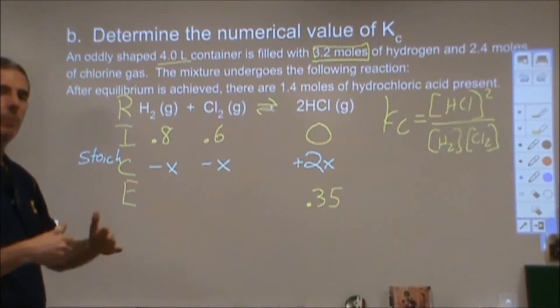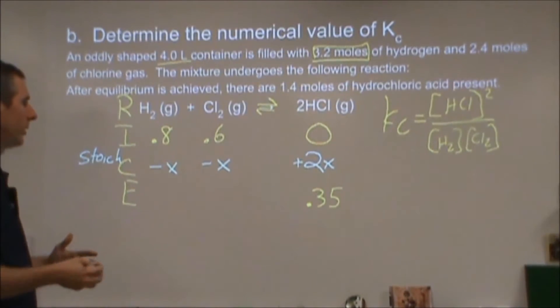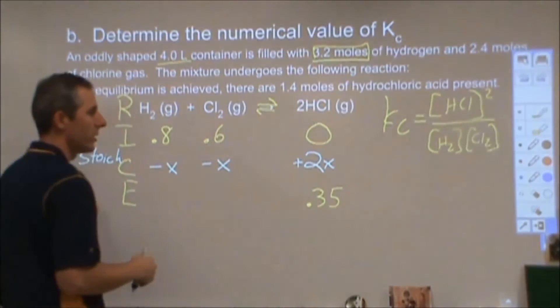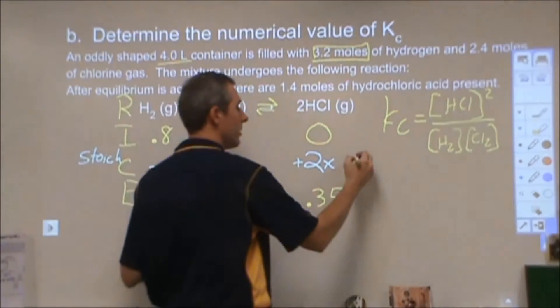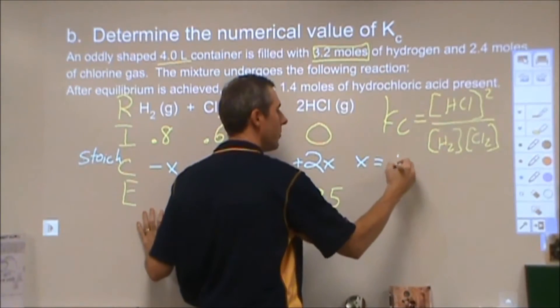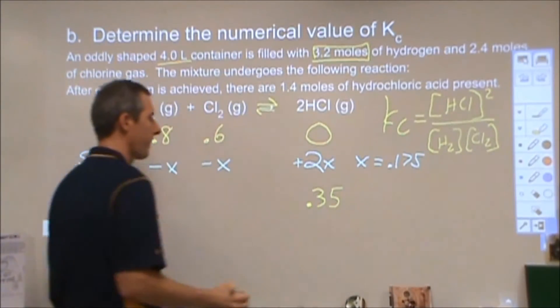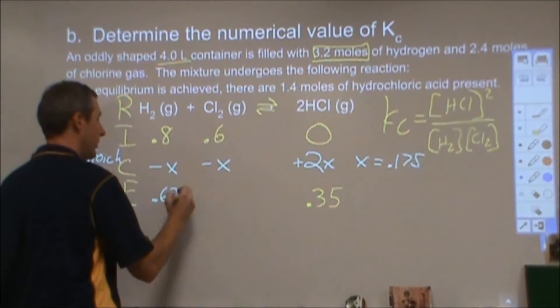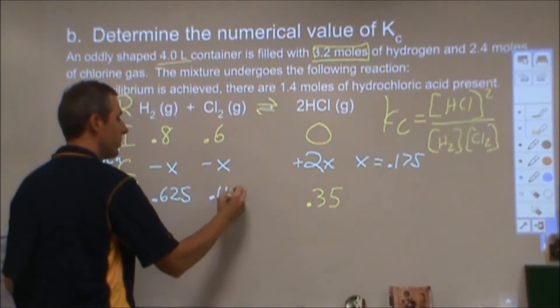And in equilibrium, we're going to end up with some of each thing left. So instead, we don't really know where we're going to draw off until we get to here and we can figure out how much that is changed by. So our x is equal to 0.175, which means that this is going to be 0.625 at equilibrium, and this is going to be 0.425.